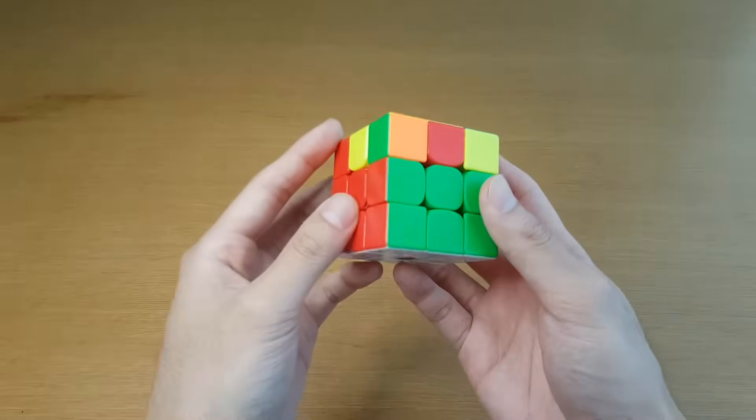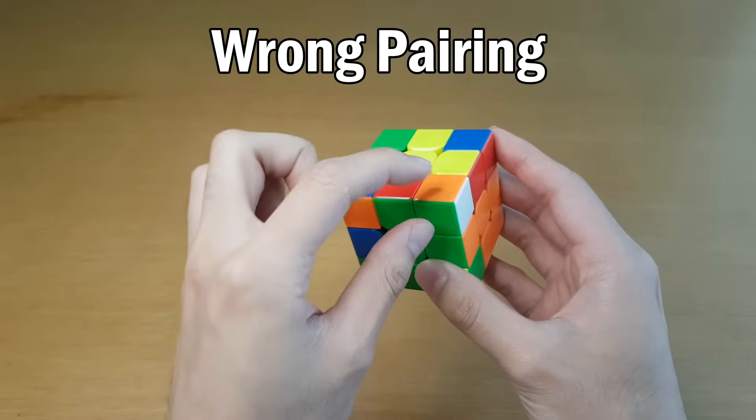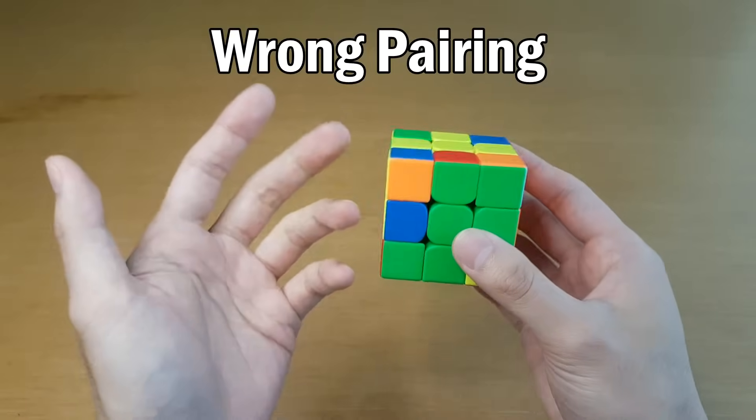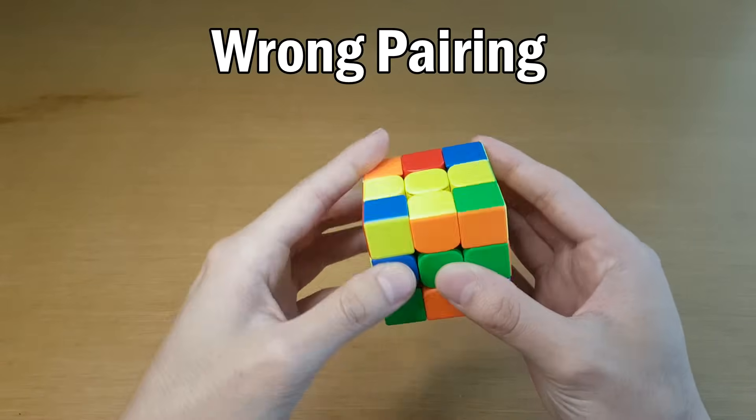Meanwhile, the one that looks like it's wrong and mismatching, if you solve it as a pair, will just solve the case. There are two methods of recognition for pseudo-slotting. The first one is wrong pairing, and the second one is EO or edge orientation. Wrong pairing is what I just showed earlier. It's when you have a case that looks like it's right, that's not right. You want the case that looks like it's wrong.